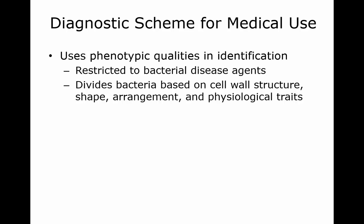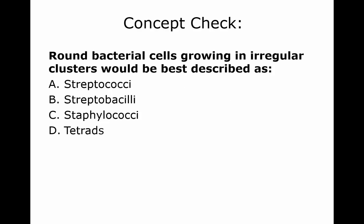As far as diagnosing for medical use, we're going to look at the cell wall structure, the shape, the arrangement, and the physiological traits, and if they've been known to cause bacterial diseases as well. Round bacterial cells growing in regular clusters should be described as in clusters. They're round so they must be cocci, and if they are in clusters it's staphylococci.